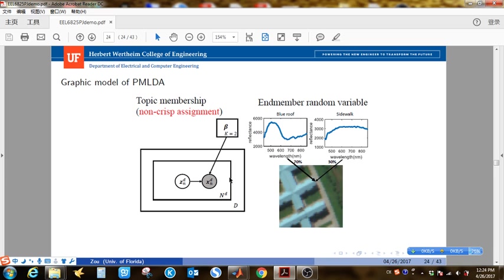So each pixel can be assigned to multiple end-members, such as this pixel can be considered as 70% blue roof and 30% sidewalk.